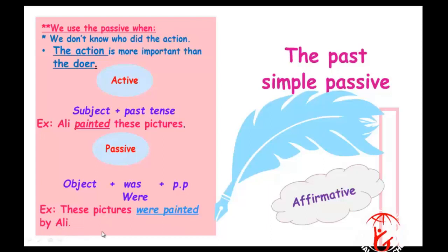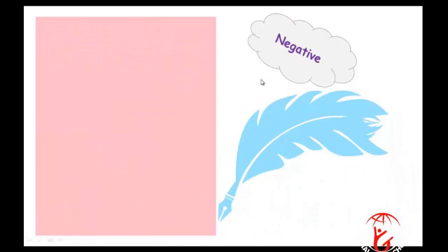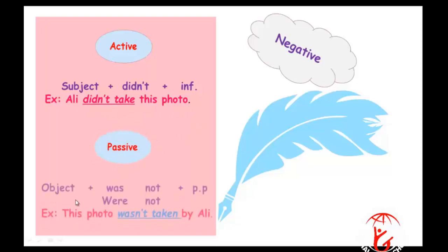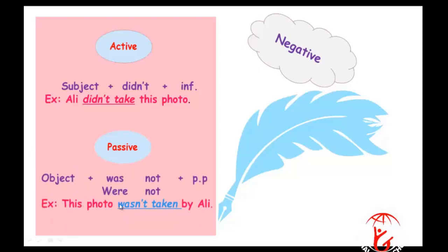Now the negative form. In the active: subject plus didn't plus infinitive — for example, 'Ali didn't take this photo.' In the passive, we start with the object plus wasn't/weren't plus past participle. The example: 'This photo wasn't taken by Ali.' Since 'this photo' is singular, we use wasn't.